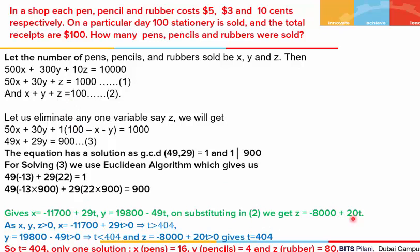The linear combination is 49·(−13) + 29·22 = 1. Multiplying by 900 gives x₀ = −13·900 = −11700 and y₀ = 22·900 = 19800. The general solution is x = −11700 + 29t, y = 19800 − 49t. Putting x and y into equation 2 gives z = −8000 + 28t. Since number of items cannot be negative and each type was bought, we require x, y, z > 0. Applying x > 0 gives t > 404, y > 0 gives t < 404, and z > 0 gives t = 404. Substituting t = 404 gives x = 16, y = 4, z = 80.